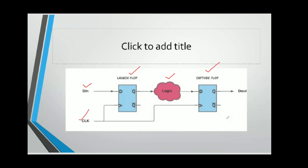Let us understand hold time with an example. Here we have two flops — one is called the launch flop and the other is called the capture flop. In between these two we have combinational logic. The input is provided to the first flip-flop and the same clock is provided to both flops. If there is a hold time violation, the circuit may not store the correct data — a D flip-flop that is supposed to store one may store zero, or vice versa.